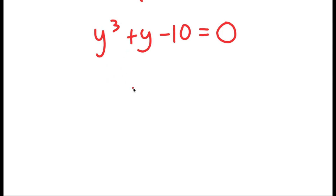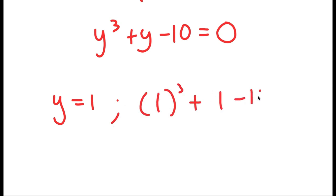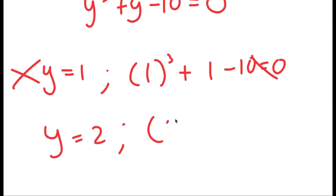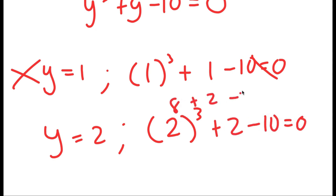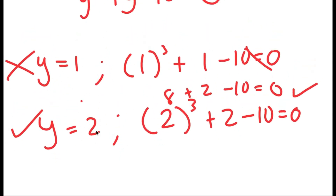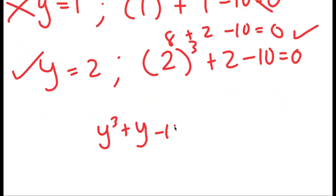Now I need to first find one solution of y, and then once I have that, I can find the remaining solutions. I'm going to test values of y. When y equals 1, I have 1 cubed plus 1 minus 10, which equals negative 8, not 0 — so that doesn't work. When y equals 2, I get 2 cubed plus 2 minus 10: 8 plus 2 is 10, and 10 minus 10 is 0. So y equals 2 is a solution.